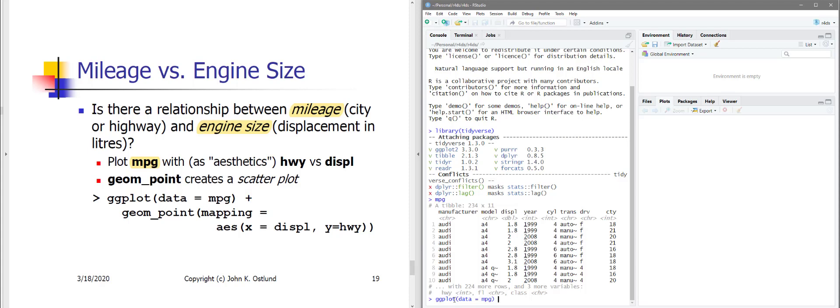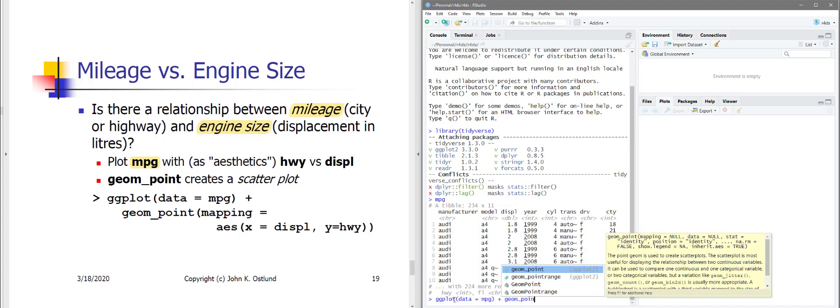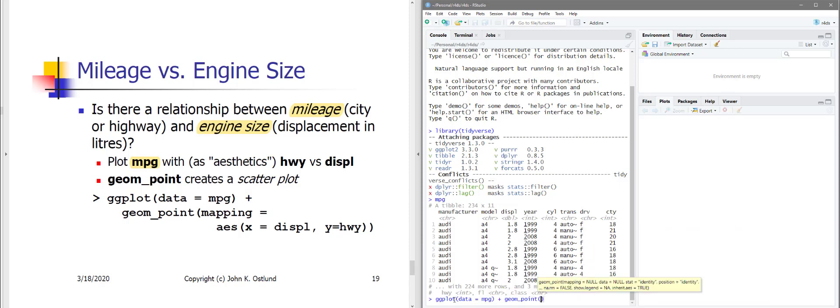So we're going to start by saying ggplot's data is MPG, and then we're going to add a particular kind of plot geometry. Namely, we're going to create a scatter plot. Geometry is point, and in here, we need to do a mapping of aesthetics, so-called.